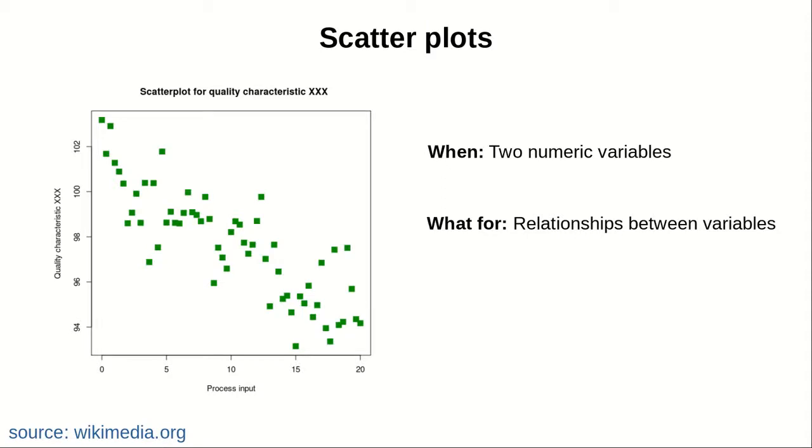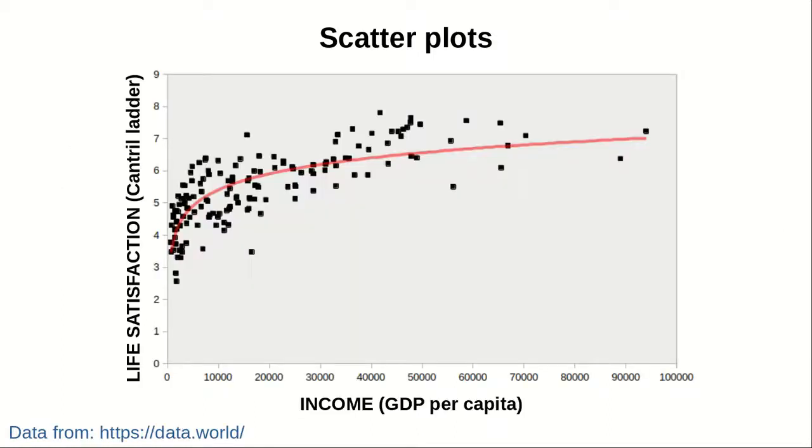When you want to represent the relationship between two numerical variables, what we use is something called the scatter plot. The scatter plot is useful to understand the relationship between different variables. In this graph here we show the relationship between income and life satisfaction or happiness, and it's interesting that you can see that the more you earn, the happier you are. But actually the curve gets saturated very early, and even if you get massive amounts of increase in your income, that doesn't reflect in an actual increase in your life satisfaction.